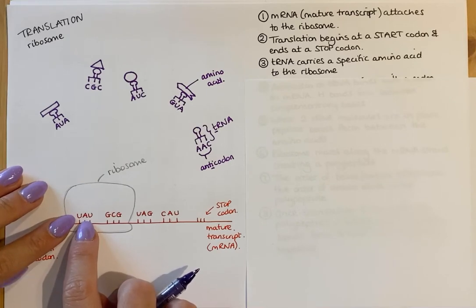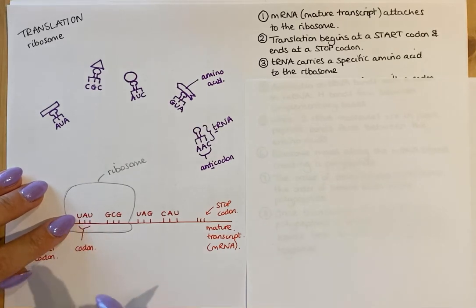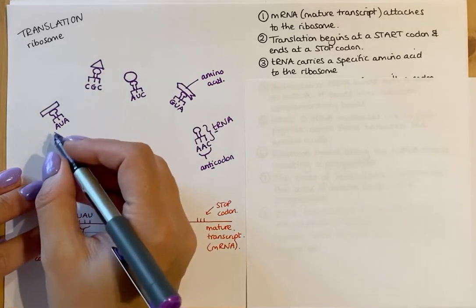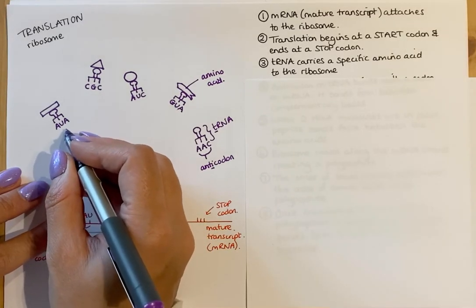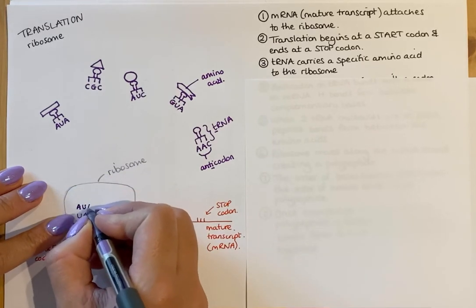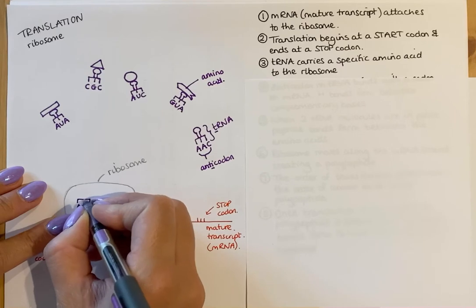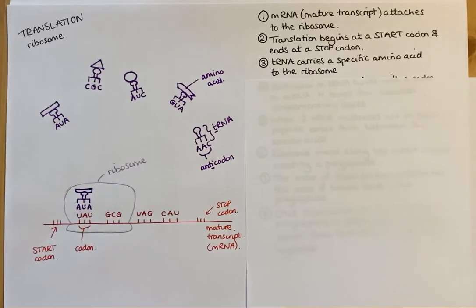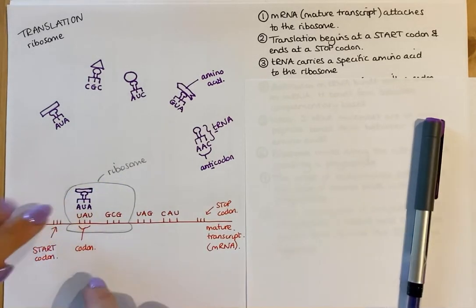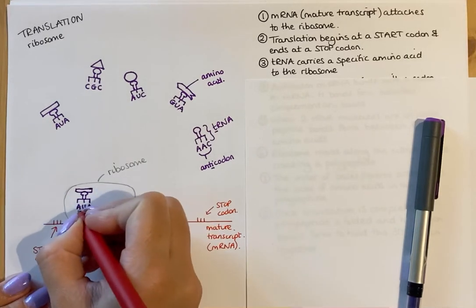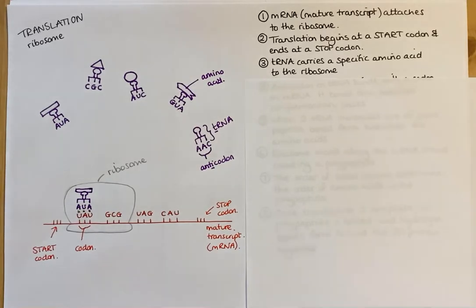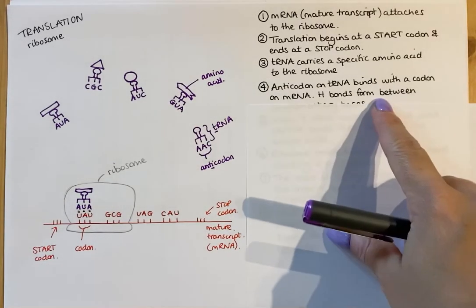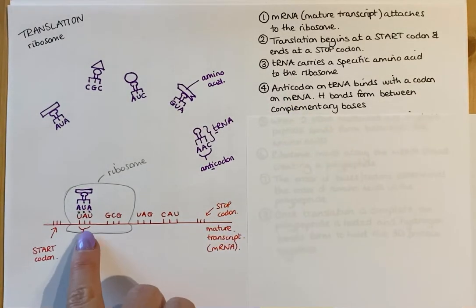The codons are complementary to an anticodon on a tRNA molecule. If we look at this codon here, which is UAU, we need a pairing with an anticodon that matches by complementary base pairing. So UAU would pair with AUA. This tRNA molecule would come down and pair with that codon, and hydrogen bonds form between those bases — the same as any other base pairing. So an anticodon on a tRNA binds with a codon on mRNA, and hydrogen bonds form between those complementary bases.